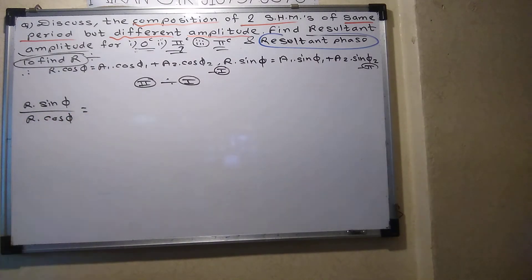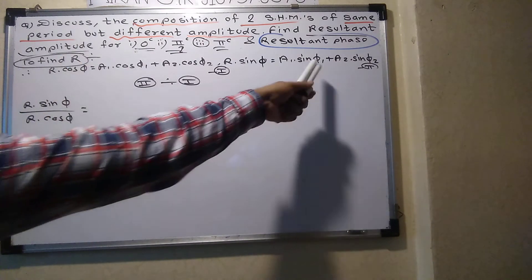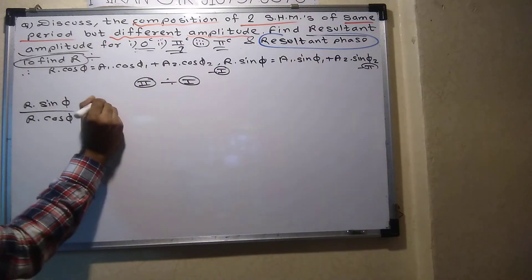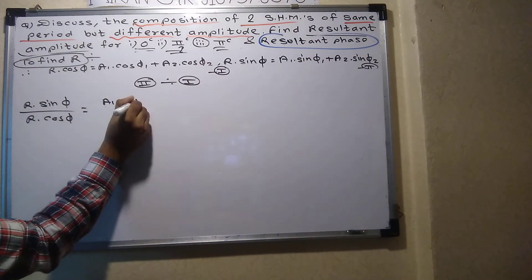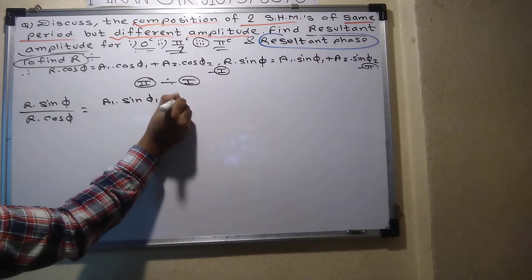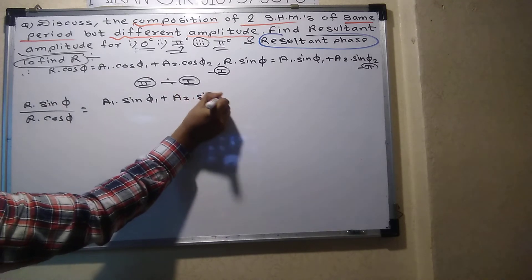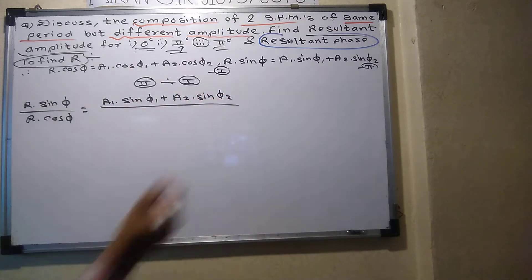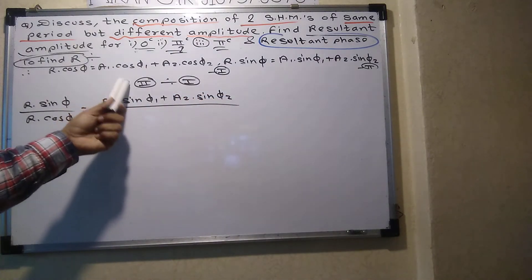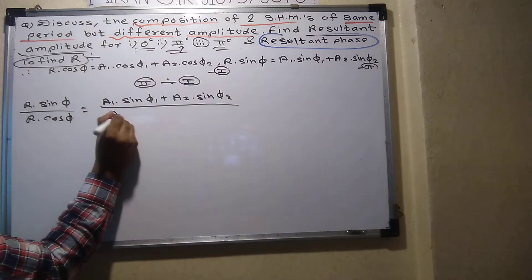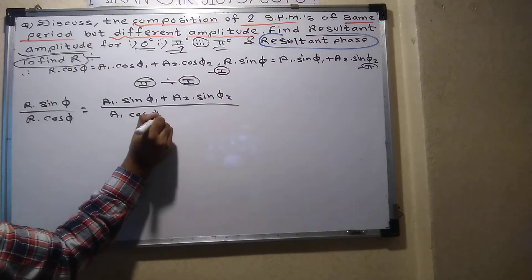Equals to what is the right hand side of equation number two? A1 sin phi 1 plus A2 sin phi 2, the whole divided by what is the right hand side of equation one? A1 cos phi 1, A2 cos phi 2.